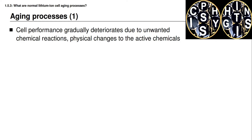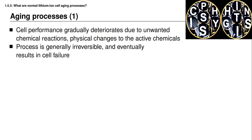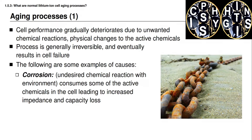One of these you've already seen, which we learned about in the last lesson: the formation of an SEI layer due to a side reaction between the solvent in the electrolyte and the graphite particles in the negative electrode. The processes that result in aging are usually not reversible, and they eventually result in the cell reaching a point where it's no longer considered capable of performing its duty in an application.